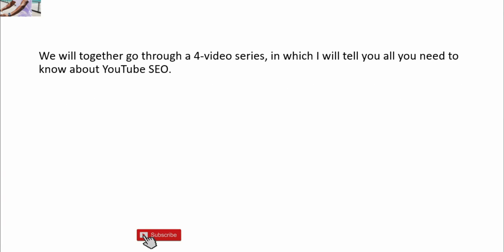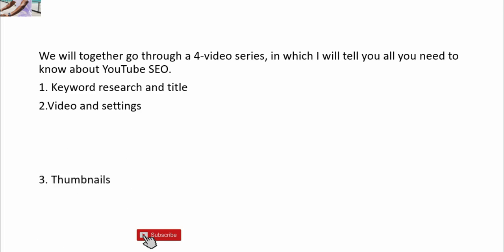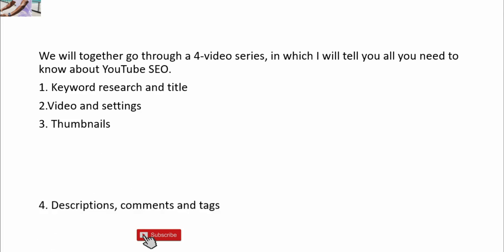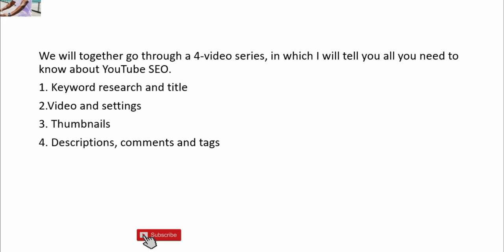We're going to go through a four-video series in which I will tell you all you need to know about YouTube search engine optimization. In that four-video series, we're going to tackle four things. Number one is keyword research and title. Number two is videos and settings. Number three is thumbnails. Number four is description, comments, and tags, which is so important.